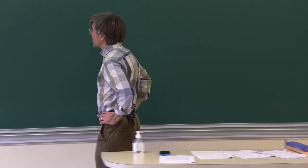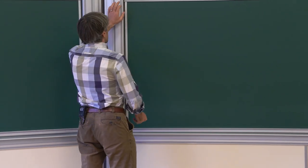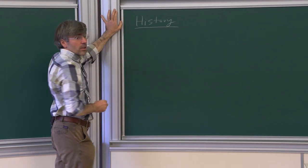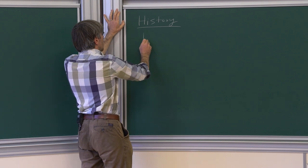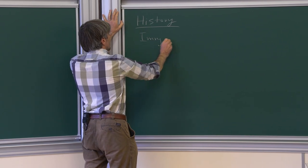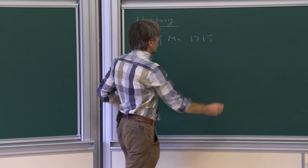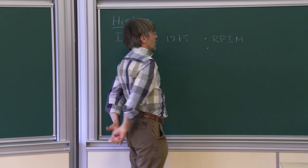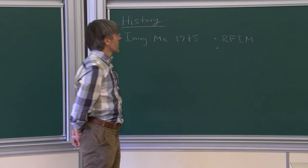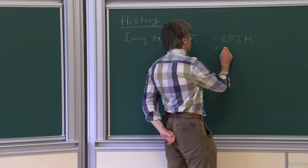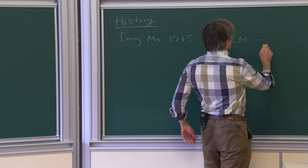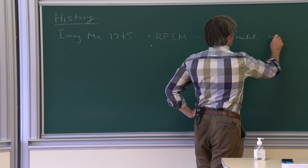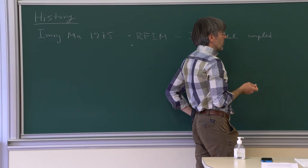Today's lecture is going to be really simple and elementary, so let me first start with the history of this problem. The random field Ising model was introduced by Imry and Ma in 1975. They defined the model and made several important observations. The random field Ising model is defined as the Ising model coupled to an x-dependent random magnetic field.